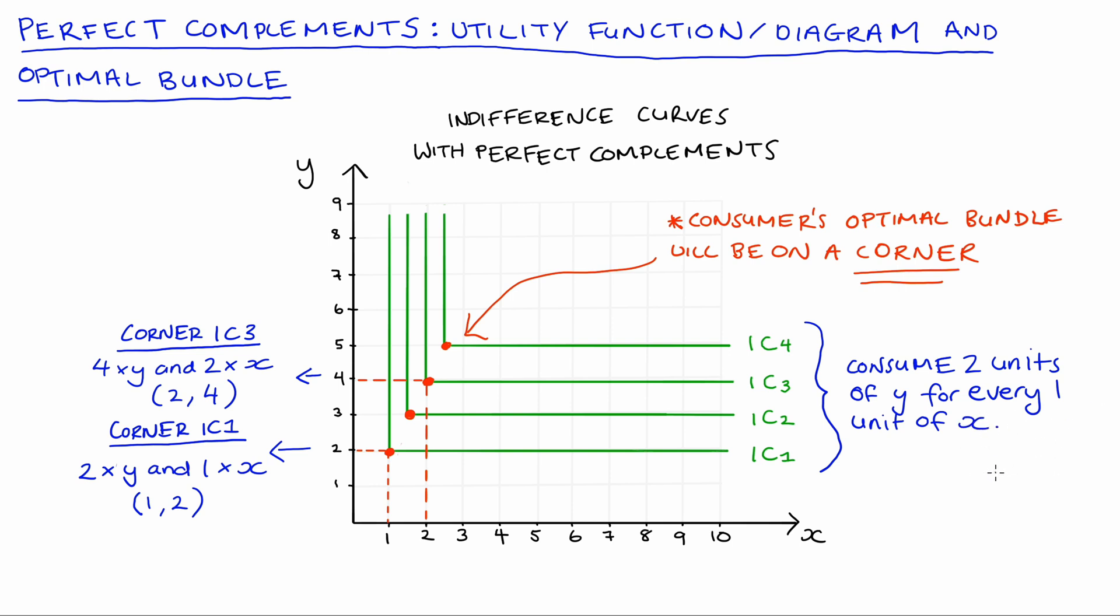Now which corner we actually end up on will depend on the budget constraint. If the budget lies here for instance it will be this first point, or if our budget constraint is further up it will be on IC3, it'll be that corner. We'll bring the budget constraint into the mix in a second.